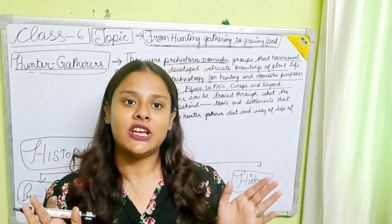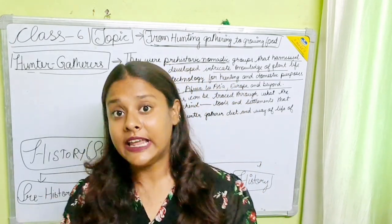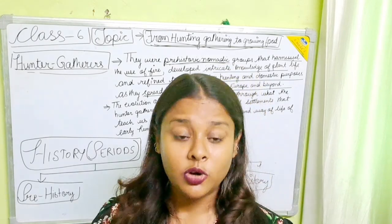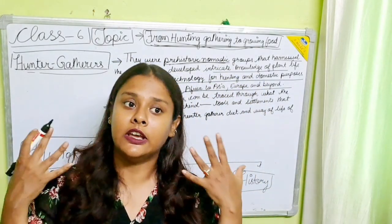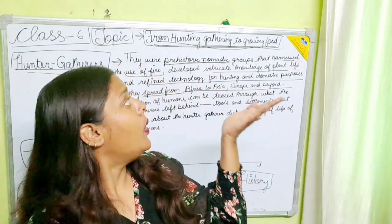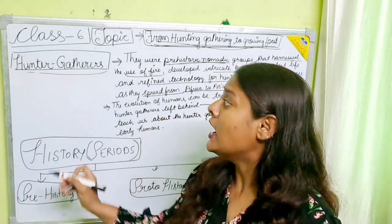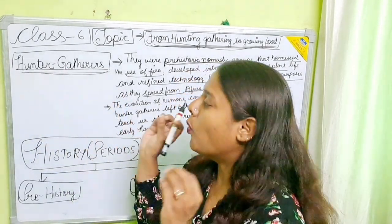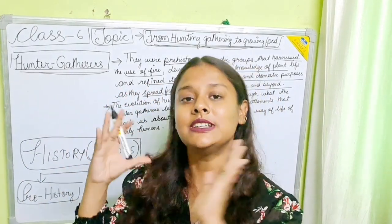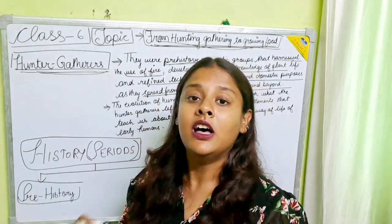In today's chapter, we are going to start with Chapter 2 of Class 6th History named as 'From Hunting Gathering to Growing Food.' In this chapter, we are going to study how the society evolved from a hunting gathering society to a food production society. When we talk about hunter gatherers, the people who hunt animals and gather plant products are regarded as hunter gatherers. This is the simplest definition.